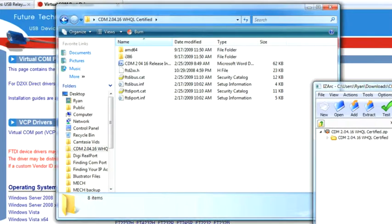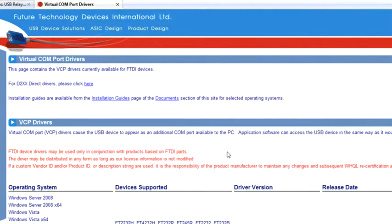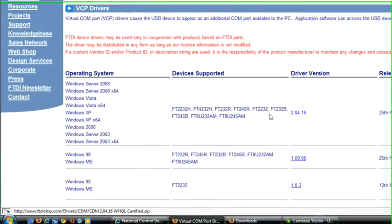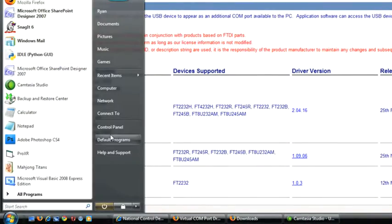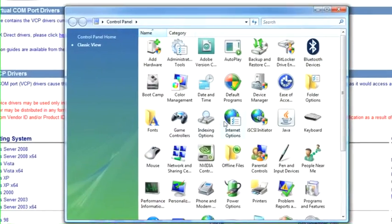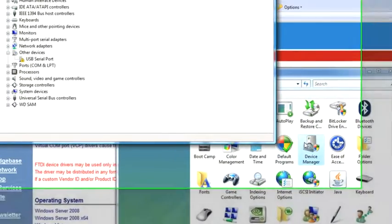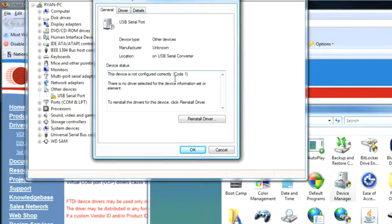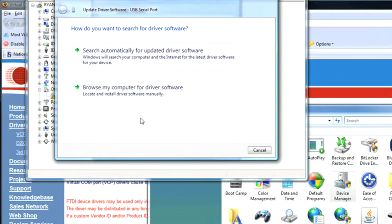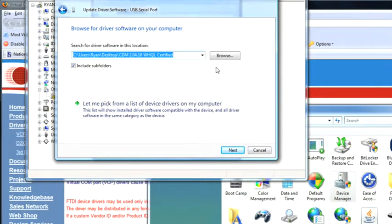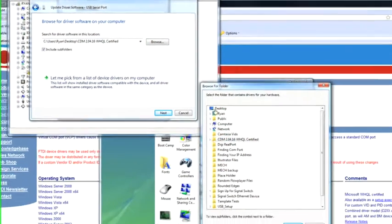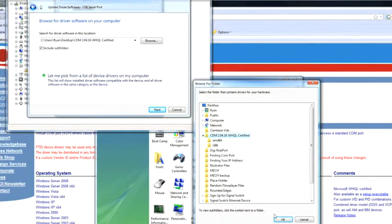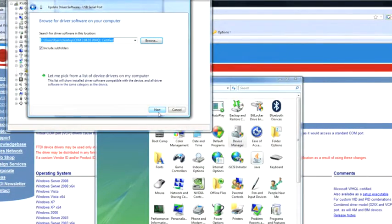You can exit out of this window and this window. And now you'll want to open your device manager. So go down to Start, Control Panel, Device Manager, and you should see this USB stereo port under Other Devices. You'll want to right-click on that, select Properties, Reinstall Driver, Browse My Computer for Driver Software, select Browse, Navigate to that folder, select OK, and Next.